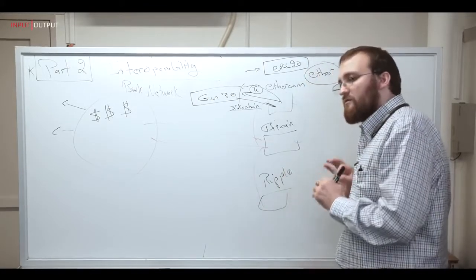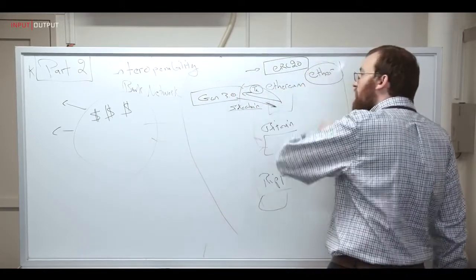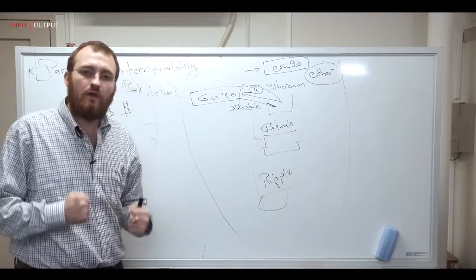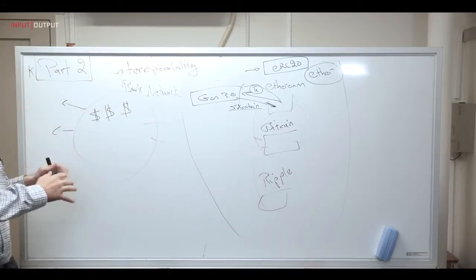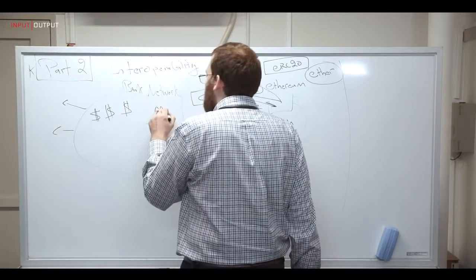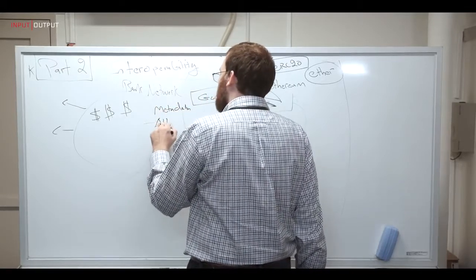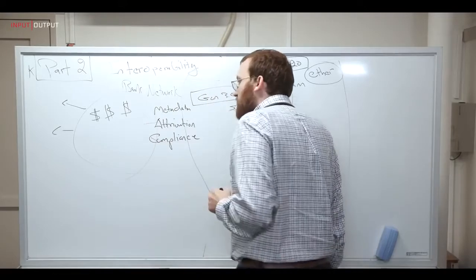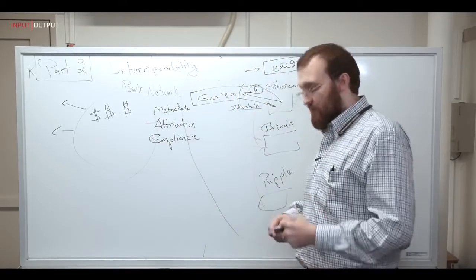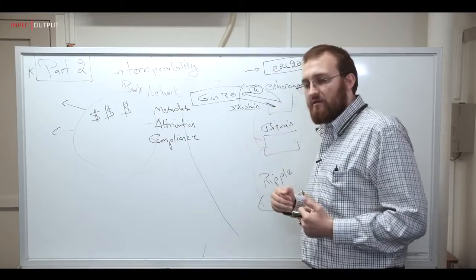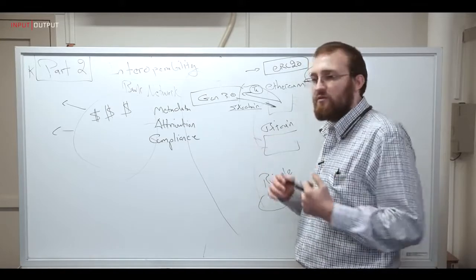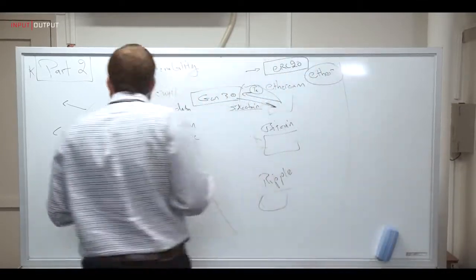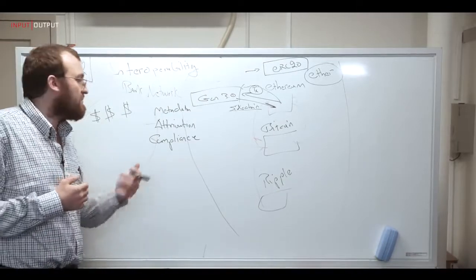However, this is only part of the story. Even if we can create a utopia where all blockchains can talk to each other, the issue is that this world is still incompatible with this world, principally because of three factors. One is the notion of metadata. Two is the notion of attribution. And three is the notion of compliance. So metadata is the story behind a transaction. It's not that you've spent $50 that matters. It's where did you spend it? What did you spend it on? To whom did you give it to?